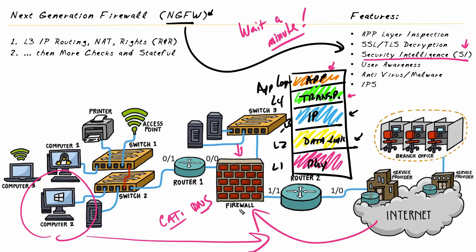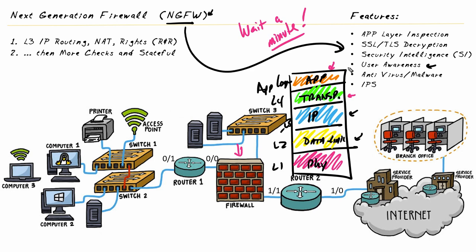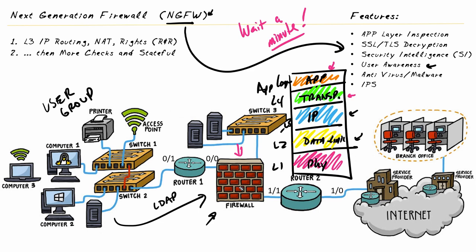Another great benefit is user awareness — controlling traffic through the firewall based on user identity or group membership. Policies can specify that people in Human Resources, Sales, or Marketing are allowed to access certain applications or websites. The NGFW integrates this knowledge through single sign-on with Active Directory, LDAP queries, or a captive portal technique — where users trying to reach the internet are prompted to accept an agreement or provide credentials — allowing the firewall to enforce and track policy per user.